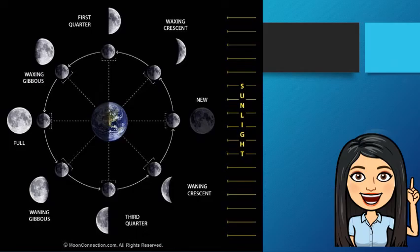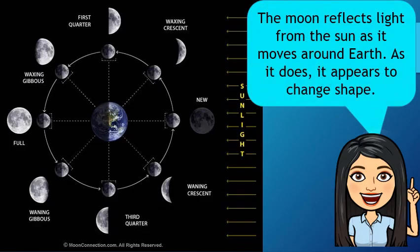Did you notice the shape of the moon? The moon reflects light from the sun as it moves around the Earth. As it does, it appears to change shape. Sometimes, the moon appears as round as a ball or full moon. Sometimes, only a part is seen. Other times, it is not visible at all. The apparent changes in the moon's appearance as seen from Earth is called phases of the moon.